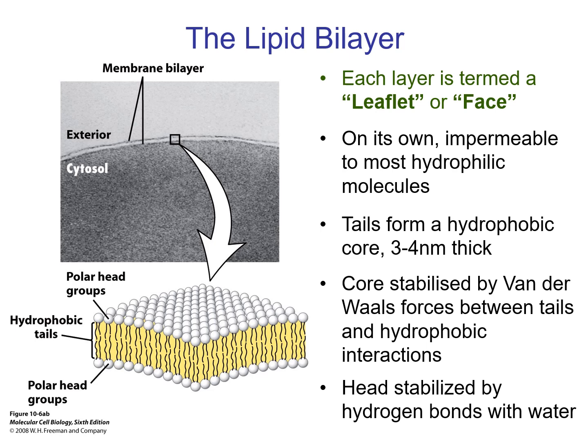We have a cytosolic or cytoplasmic leaflet on the bottom that would be in contact with the interior of the cell, and then an external leaflet on top. This is a very stable configuration because all of the hydrophilic heads — remember they're very strongly hydrophilic — are in contact with water, while the hydrophobic tails are excluded from the water. We also have van der Waals forces between the tails that help maintain this structure.